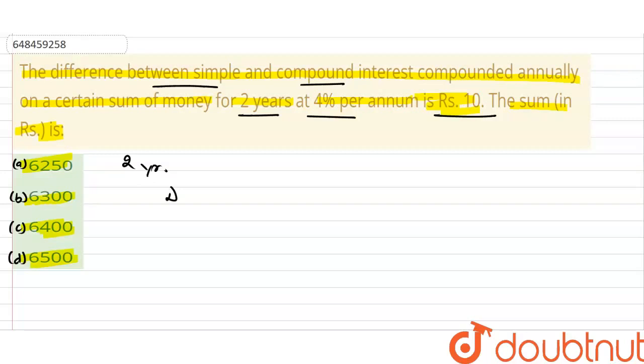If we have 2 years and the difference is given, we have a direct formula here. P into R by 100 whole square. Here the difference given is 10 rupees. Principle kitna hai? We need to find it. Rate is 4%, so 4 divided by 100 whole square.